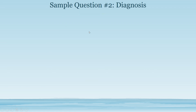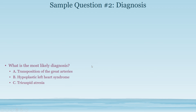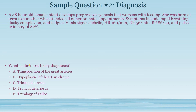Now let's discuss a sample question regarding diagnosis. We have some kind of cyanotic heart disease and need to identify which one based on the case vignette. A 48-hour-old female infant develops progressive cyanosis that worsens with feeding. She was born at term with all prenatal appointments attended. Symptoms include rapid breathing, dusky complexion, and fatigue. Vital signs: afebrile, heart rate 160, respiratory rate 56, BP 86/50, and pulse ox 82%.